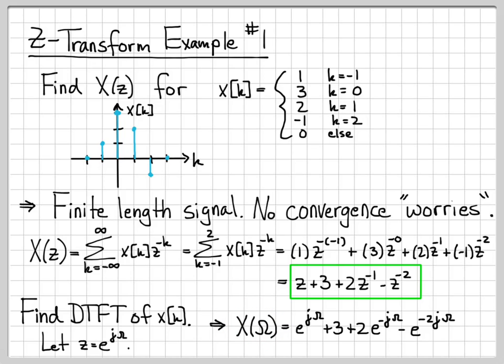So this is a nice, short, simple example, a finite length signal where we compute the Z transform. And then once we compute the Z transform, we also get out the DTFT almost trivially by just plugging in Z equals e to the j omega.